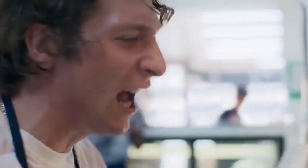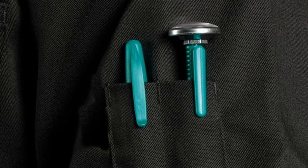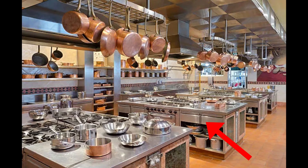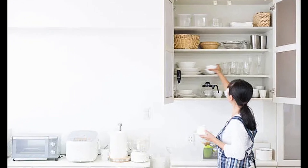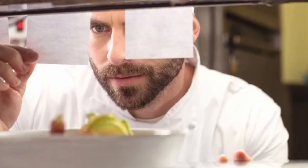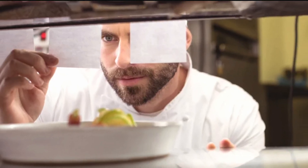Now that there are more cooks in the kitchen, some storage becomes shared. Each chef's L1 and L2 cache are individual — their pockets and drawers. However, all chefs, or cores, must share the L3 cache. Think of this like a communal cabinet that all chefs pull spices from, or maybe a pile of tickets for orders to be made.